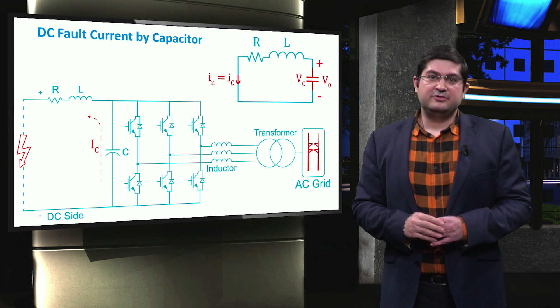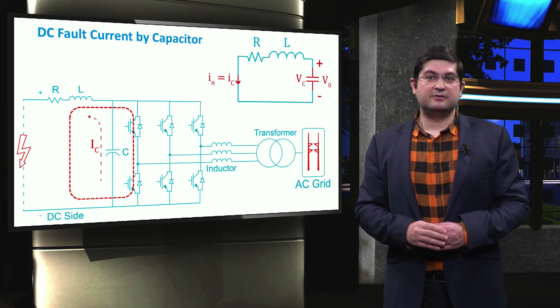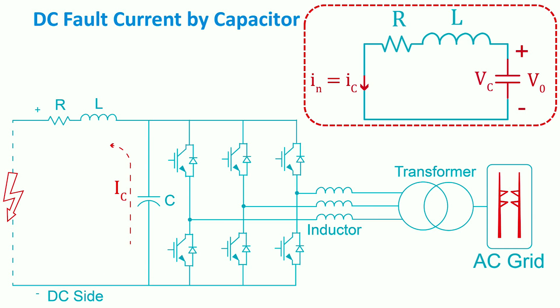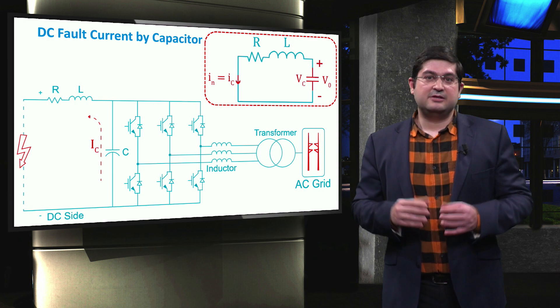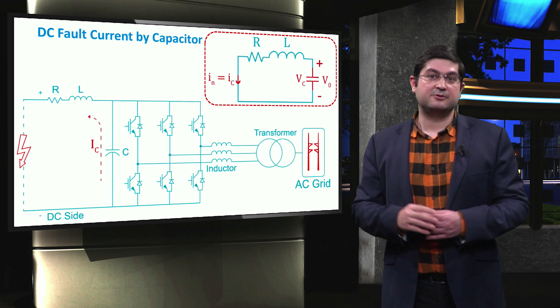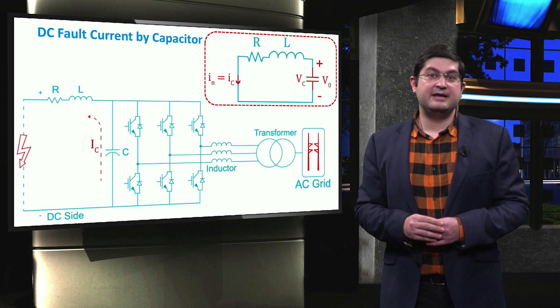The second electrical element which contributes to the fault current is the capacitor of the DC link. The equivalent circuit of the capacitor shows that during the fault, the energy stored in the capacitor is released, where the fault current is IC. Note that higher values of the capacitor will typically help increase the stability of the DC link — in other words, DC link voltage fluctuations can be mitigated by increasing the parallel capacitor. However, during a fault, this causes a very large fault current in DC microgrids, which we will discuss further later in this video.